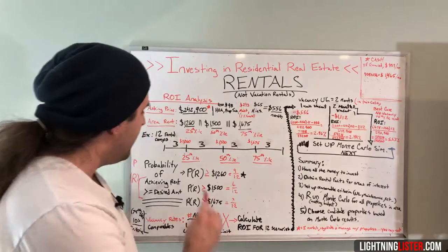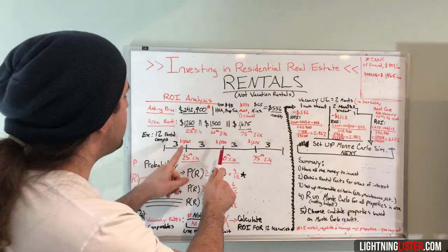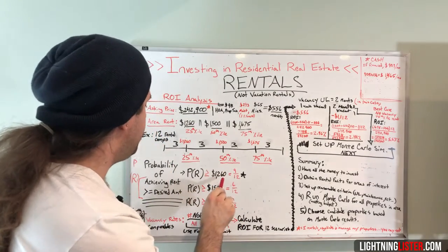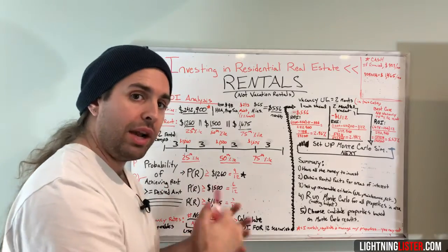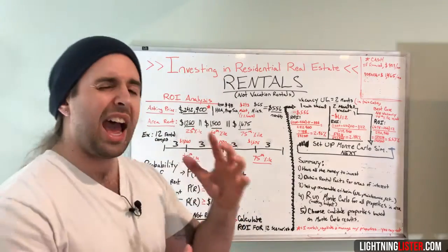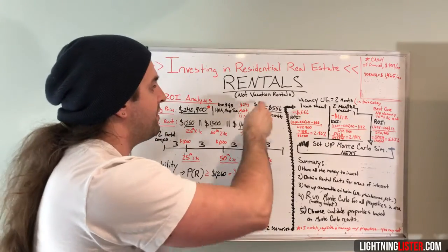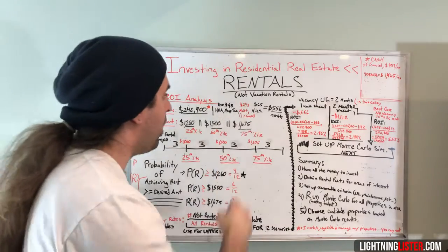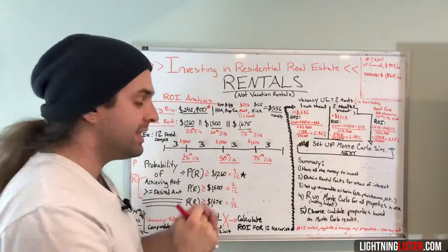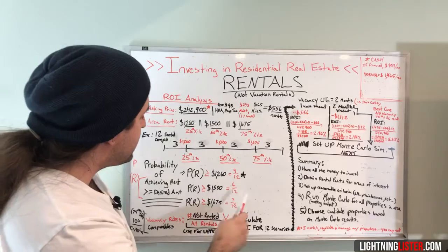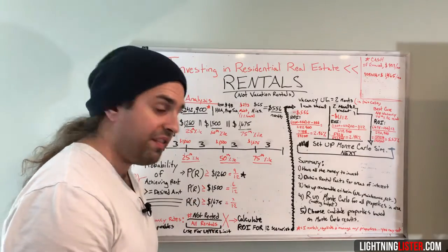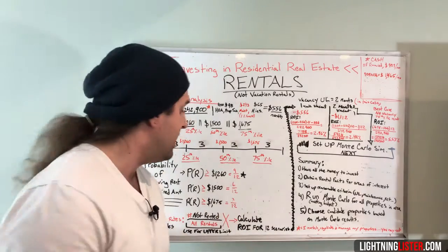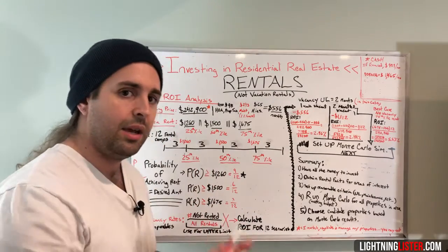I like to use between the 25th and 50th percentile — I'm very conservative. So the rents of $1,260 and $1,500 are the range, and I use $1,260. It's the probability of achieving a rent greater than or equal to the desired rent. Since I'm buying in cash, I don't have to meet some monthly amount except the $556 monthly burden. As long as rent is higher than $556, I'm making positive cash flow. I'm more comfortable with the 75% chance of $1,260 based on the available data.